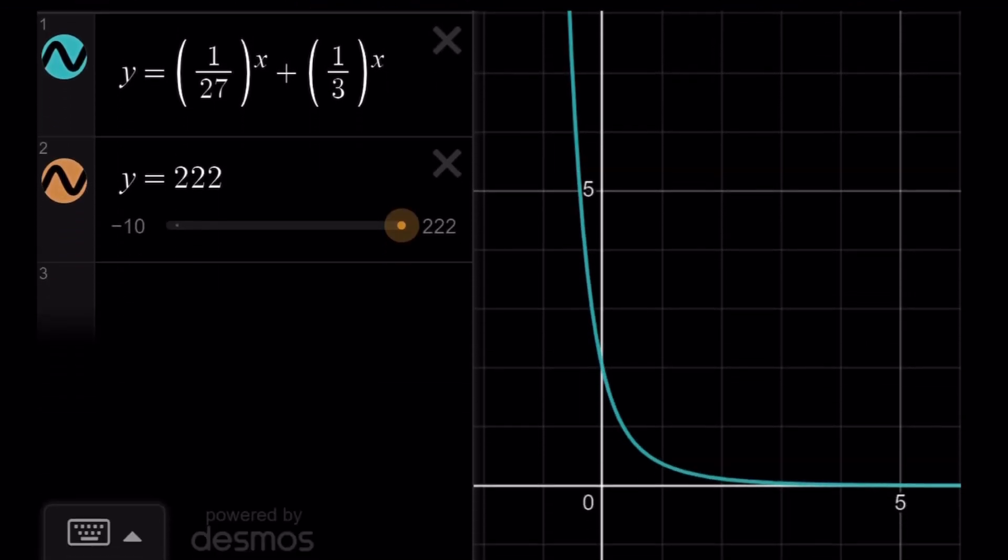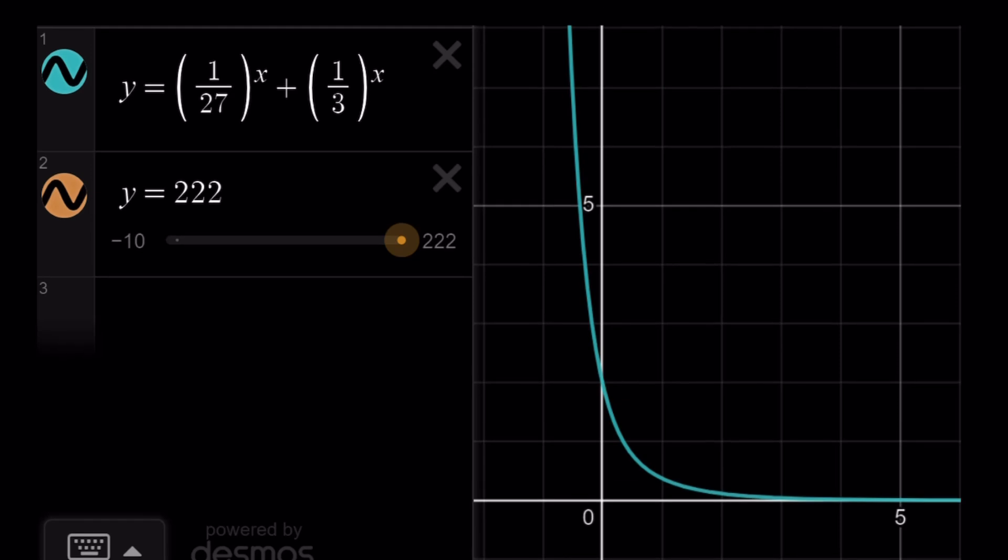There you go. So this is the graph of our function, and it intersects the horizontal line. Wait, where is the intersection point? It's not here because look at this. This is five. It didn't fit the screen. It's way above, but you get the idea. And that's going to intersect because this is a decreasing function. This is horizontal. They're going to intersect at a single point.